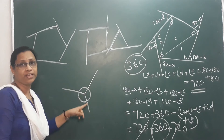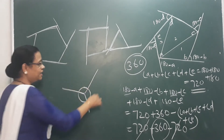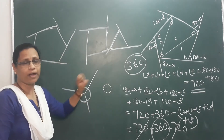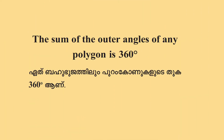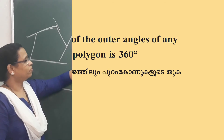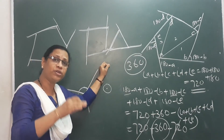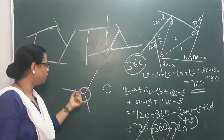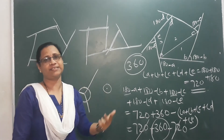The angle around a point is 360 degrees. This gives us the intuition: if we bring all the outer angles of any polygon to a single point, they complete a full rotation. Therefore, the sum of the outer angles of any polygon is 360 degrees. If the angle is around a point, it is 360.